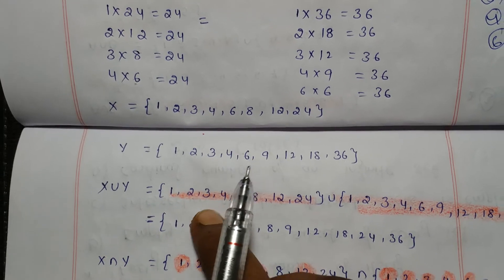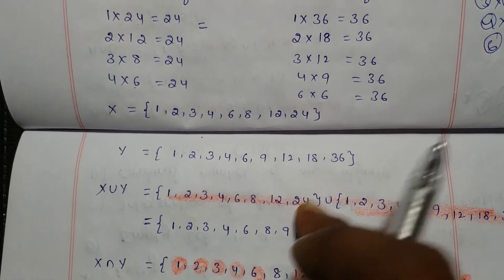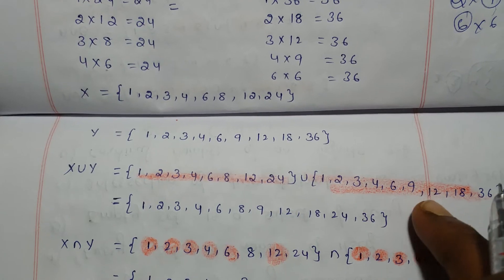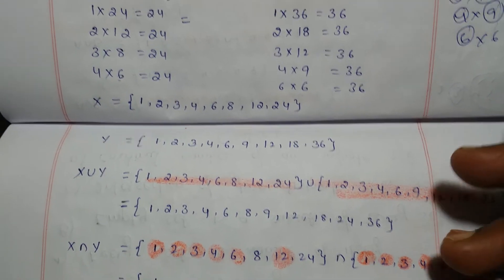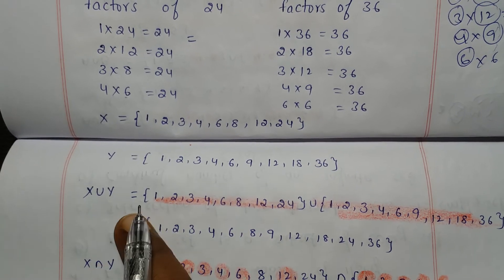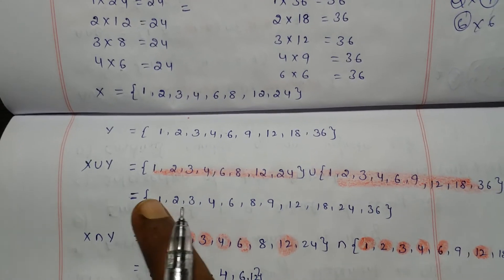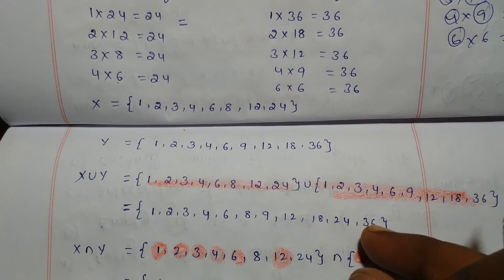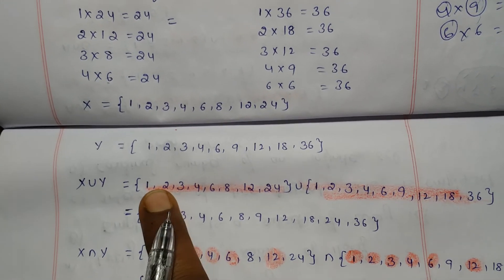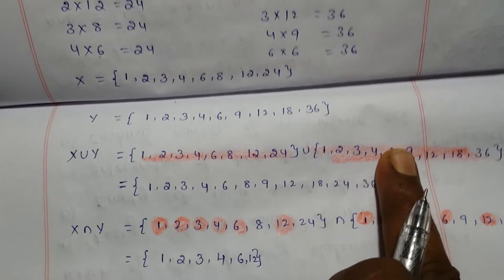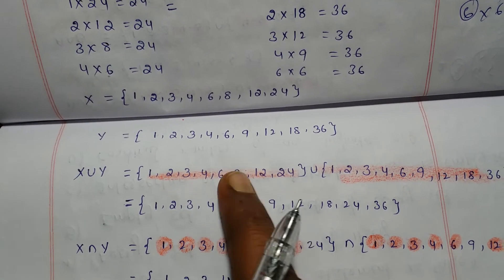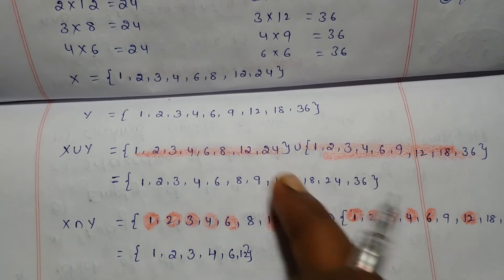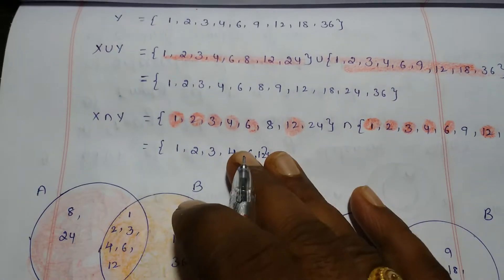X union Y is nothing but combining all elements from both X = {1, 2, 3, 4, 6, 8, 12, 24} and Y = {1, 2, 3, 4, 6, 9, 12, 18, 36}. Write all elements from both sets without repetition: X union Y = {1, 2, 3, 4, 6, 8, 9, 12, 18, 24, 36}.